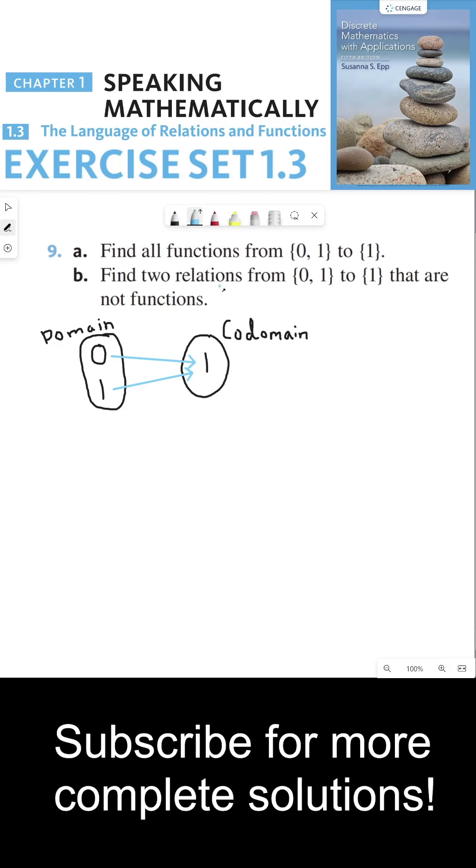For part B, we have to find two relations from 0, 1 to 1 that are not functions. The one relation from 0 to 1 would be if I send 0 to 1, but I don't map 1 to anything else. So this is an example of a relation that is not a function because there is an element in my domain that has no output.